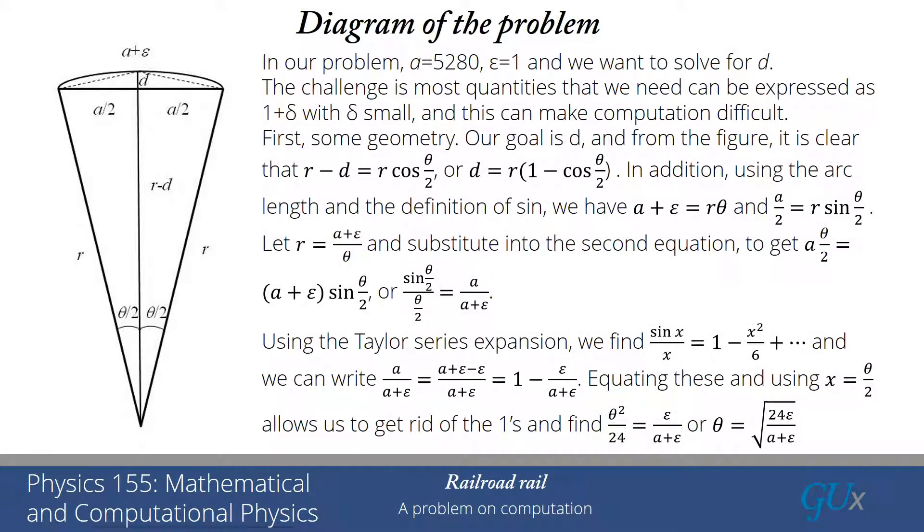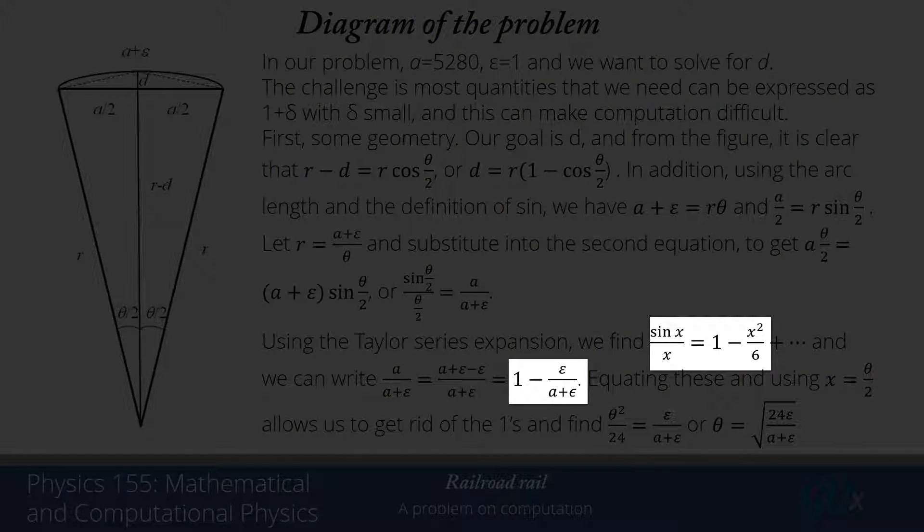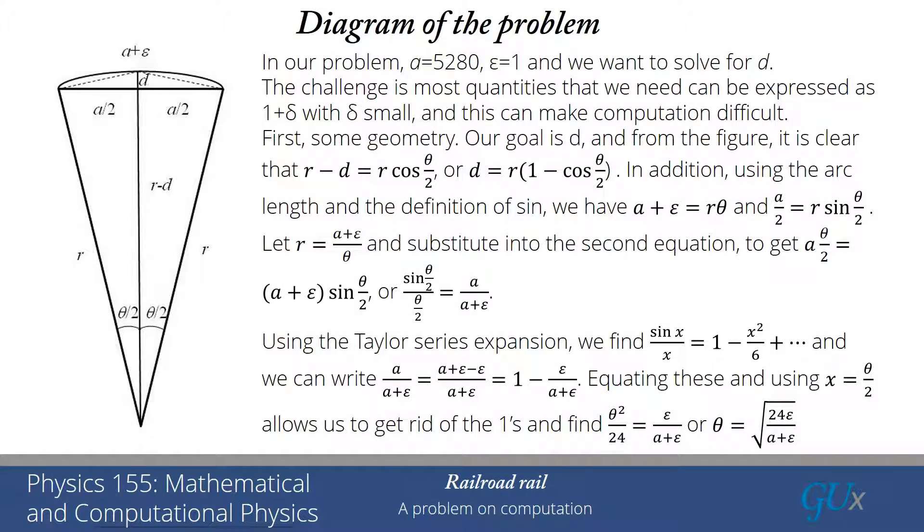I can write A over A plus epsilon as 1 minus epsilon over A plus epsilon. If I equate these two with x replaced by theta over 2, I can cancel the 1 from both equations. Then I'm just left with small things. I get theta squared over 24 equals epsilon over A plus epsilon, or theta equals the square root of 24 epsilon over A plus epsilon.